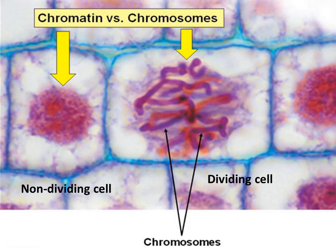In non-dividing cells, individual chromosomes are not visible, even with the aid of physiological stains for DNA or electron microscopy. However, during mitosis or meiosis, the chromosomes condense and become visible in the light microscope.